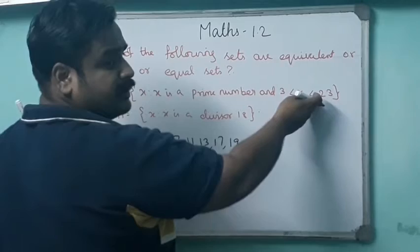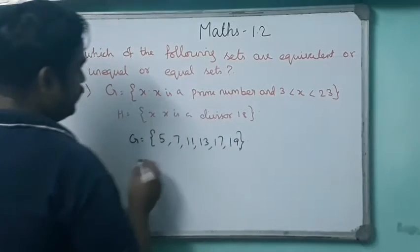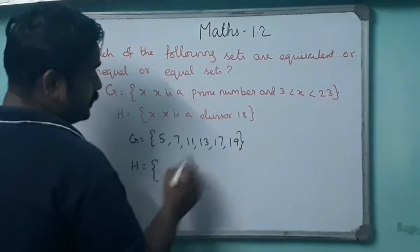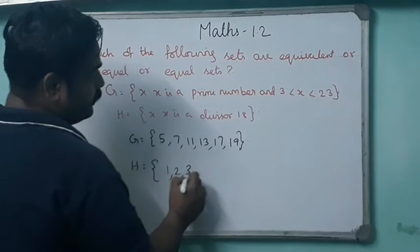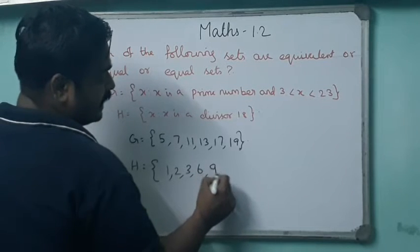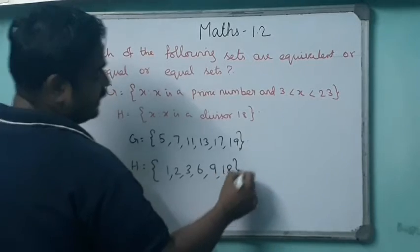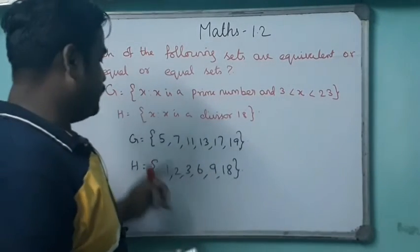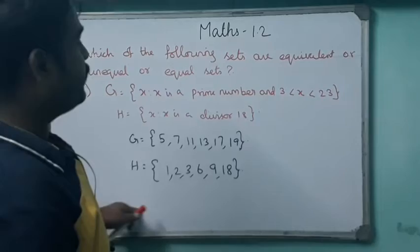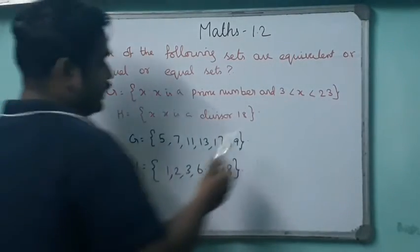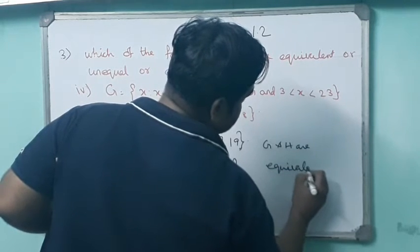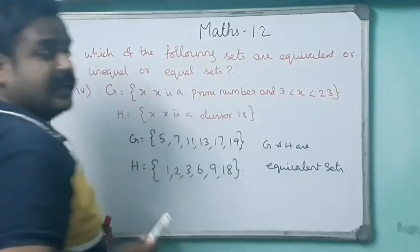For set G, the prime numbers between 3 and 23 are: 5, 7, 11, 13, 17, 19 — that is six elements. For set H, the divisors of 18 are: 1, 2, 3, 6, 9, 18 — that is also six elements. Both sets have the same number of elements but different elements. Therefore, G and H are equivalent sets.